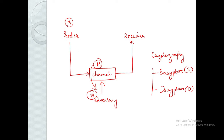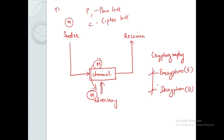First, we need to study some terminologies related to cryptography. P, or PT in some textbooks, stands for plain text. C means ciphertext. E is our encryption algorithm and D is our decryption algorithm. P means our plain text message — the message in its pure, readable form.